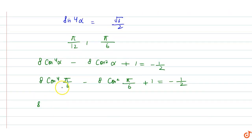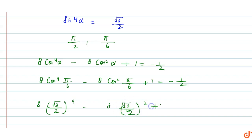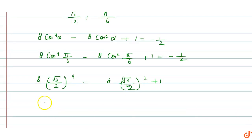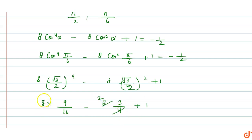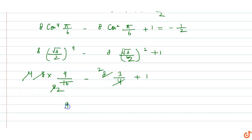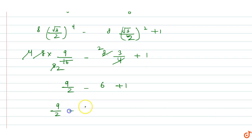तो यहां से value होगी: 8 × (√3/2)⁴ − 8 × (√3/2)² + 1 = 8 × 9/16 − 8 × 3/4 + 1 = 9/2 − 6 + 1 = 9/2 − 5. यह दोनों terms cancel होंगे: 9 − 10 = −1/2, यानि यह term satisfy हो रही है।